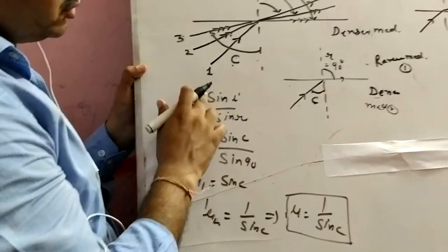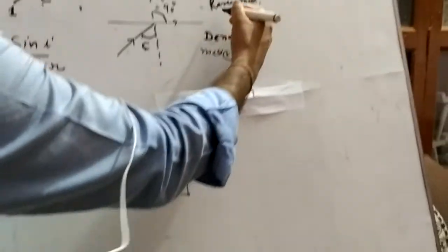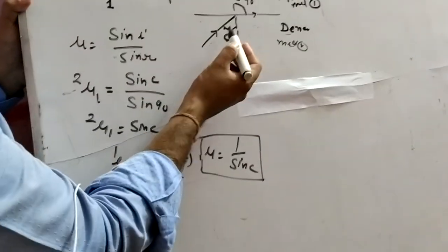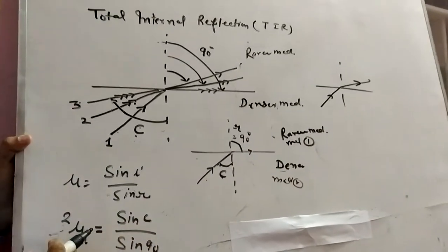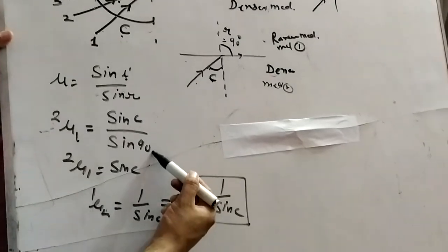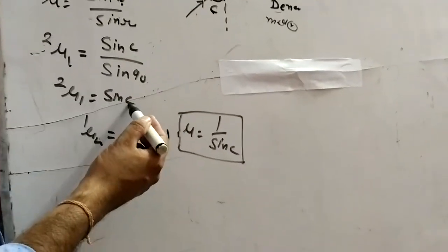Now, mu equals sin I upon sin R. We can say medium 2, this is medium first. So, 2 mu 1, because the ray is moving from second medium to the first medium. So, 2 mu 1 equals sin I means sin C upon sin 90. Because R is 90, sin 90 means 1, so 2 mu 1 equals sin C.